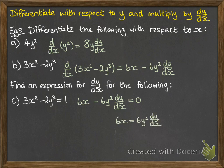So rearranging that looks like this. So we can say that dy by dx is 6x over 6y squared, which simplifies to x over y squared.